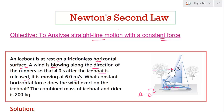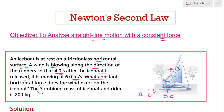The ice boat starts its motion at t=0, and after four seconds it has gained a speed of six meters per second. So the velocity changes from zero to six meters per second, meaning there is an acceleration. The question asks: what constant horizontal force does the wind exert on the ice boat?